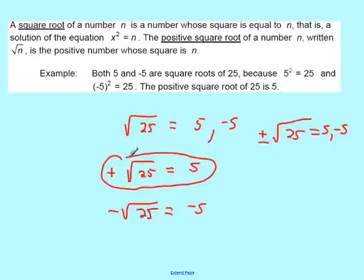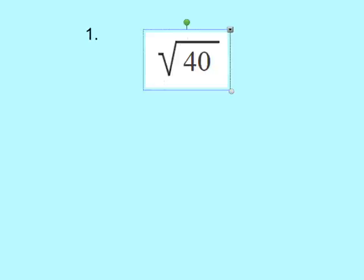Take a minute to write those definitions down. And then we're going to get started with problem number one. Problem number one, we're looking at the square root of 40. Well, we're going to estimate it because 40 is not a perfect square.